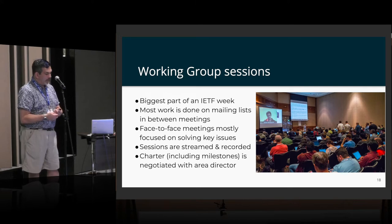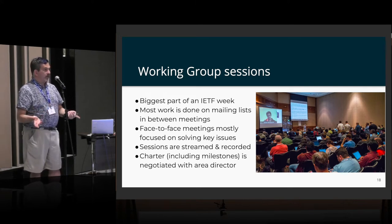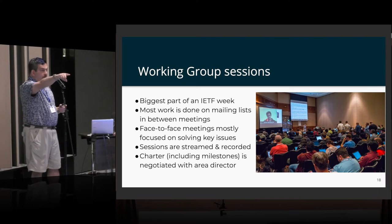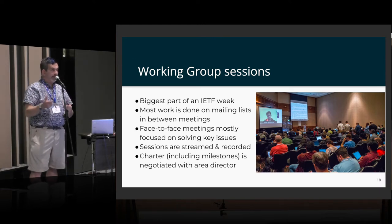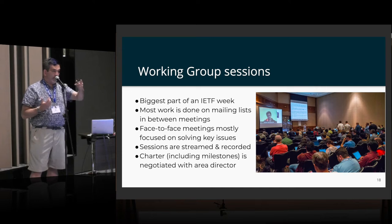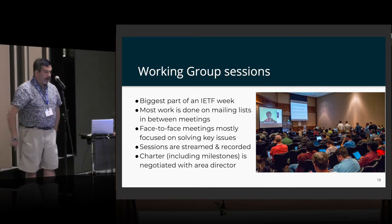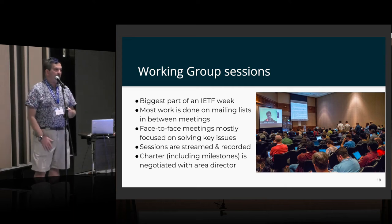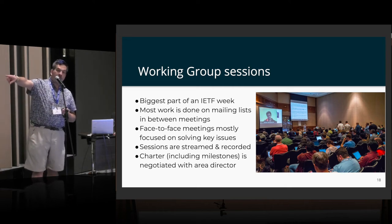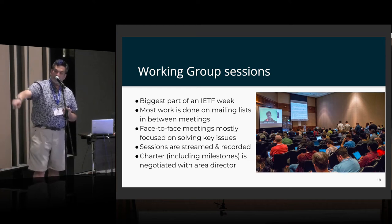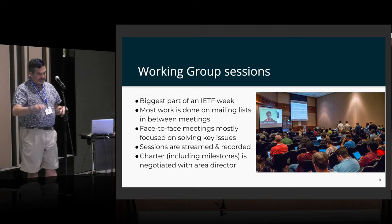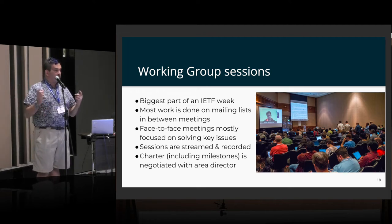The working group rooms look like this: someone's speaking, people running the meeting, chairs sitting at the front, and mics in the room. Sessions are streamed by the video team. There's often a pink box around the mic so that if you're presenting, you know where to stand to be recorded or streamed. Meet Echo is for online remote participation — when remote participants want to speak, the chair has a button to recognize them and they talk just as if they were local.